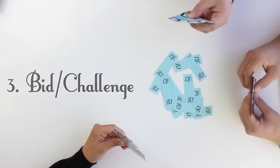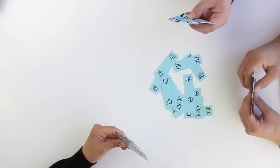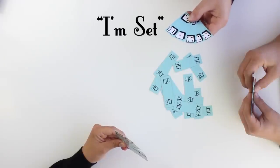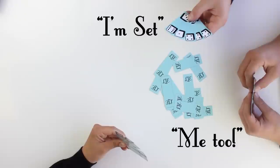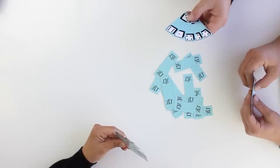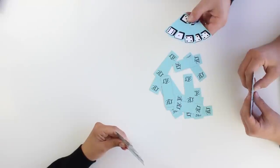Players may find it helpful to verbally confirm that their hand is set to ensure that all players have their hands ready prior to the opening bid. The oldest player makes the opening bid. For all other rounds, the winner of the previous round makes the opening bid.